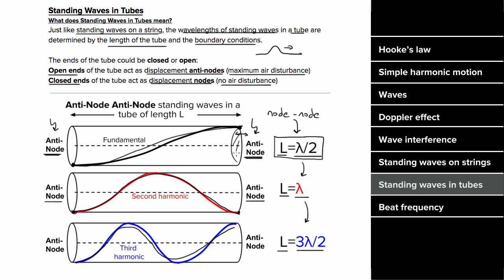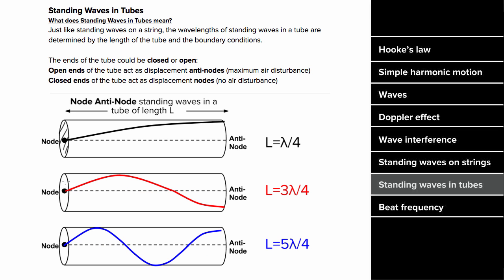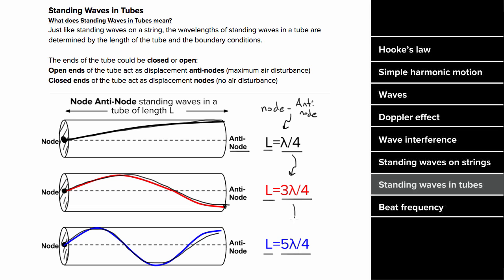If we close one end of the tube, that end becomes a displacement node since the air can't move there, and it must go to the open end which is an antinode. The largest possibility is one fourth of a wavelength. The next is three fourths, then five fourths. This is exactly the same as the node-antinode string progression: lambda over four, three lambda over four, five lambda over four — any odd integer times lambda over four are the allowed standing wave lengths.